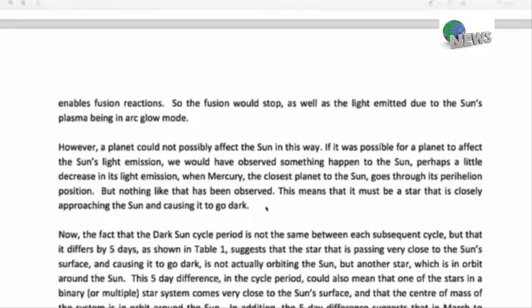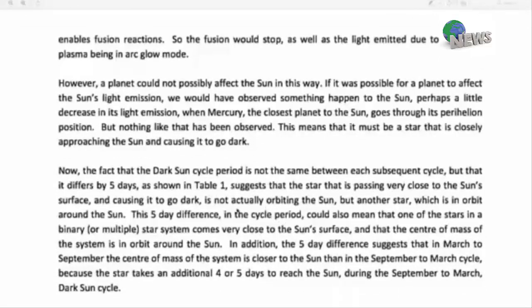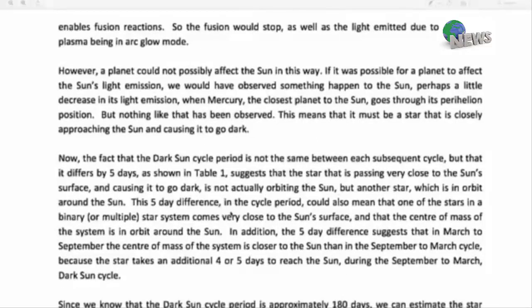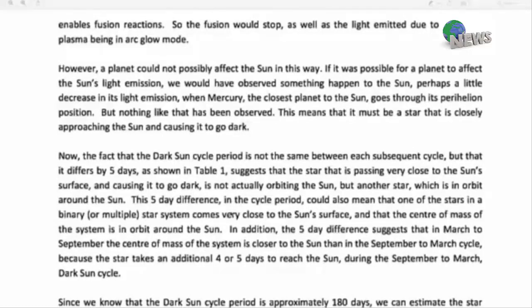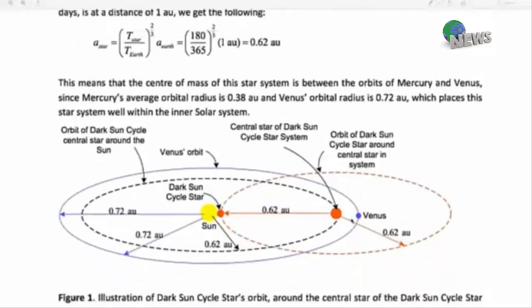Now the fact that the dark sun cycle period is not the same between each subsequent cycle, that it differs by five days shown in table one, suggests that the star is passing very close to the sun's surface and causing it to go dark, which is not actually orbiting the sun but another star which is in orbit around the sun. So what we have is potentially a dark brown dwarf that's entered into some kind of binary dance with our star. The five day difference means that the star comes very close, and it suggests that the center of mass of the system is closer to the sun in the September to March cycle because the star takes an additional four or five days to reach the sun. There's a calculation being used here that tells that the center of mass of the star system is between the orbits of Mercury and Venus.